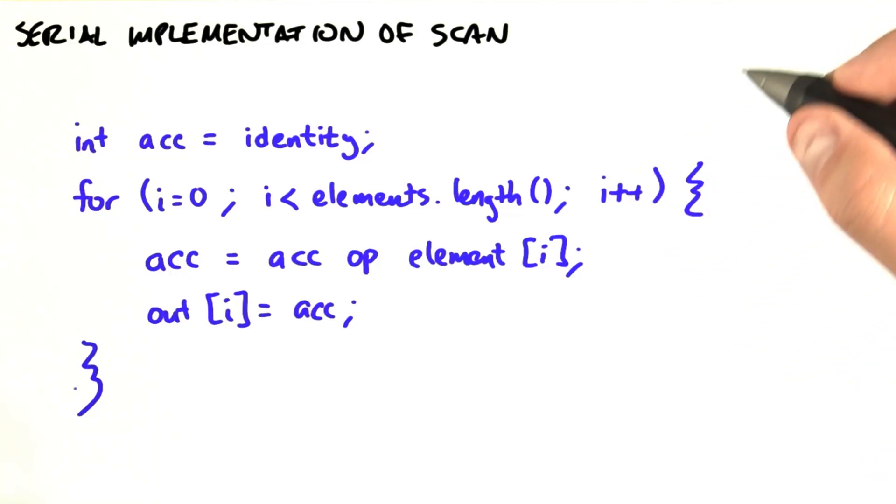So let's turn to what implementations of scan look like. We're going to start off with a straightforward serial implementation. So here's a serial implementation of inclusive scan.